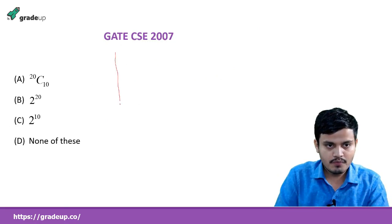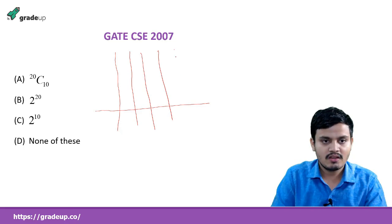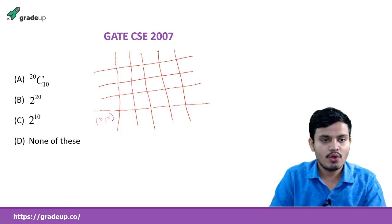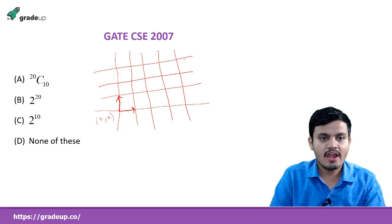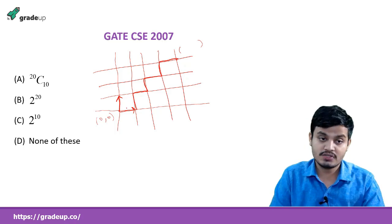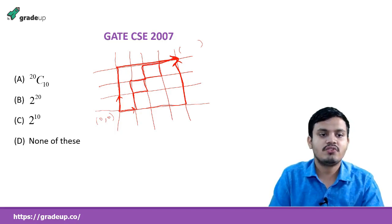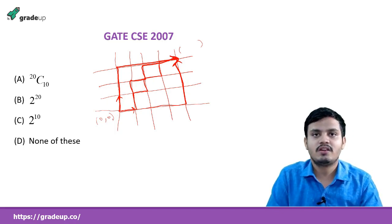Let me draw the Cartesian plane. The robot is standing at (0, 0). It can either move one step right or one step up. We need to reach a target point. One path will be going right repeatedly and then up; another path will be going straight and then up. There are many possible paths. We need to find how many such paths there are — this is a very interesting problem.